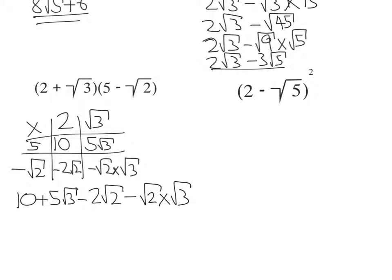There's not much to do with the first three terms. This is minus root 2 times root 3. Well, that's going to be 10 plus 5 root 3 minus 2 root 2. We can write that last term as root 6, since 2 times 3 is 6. That's my answer.